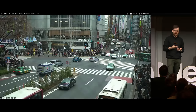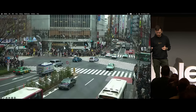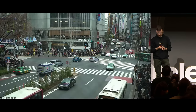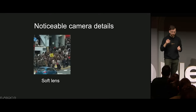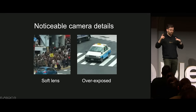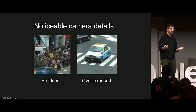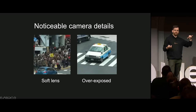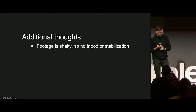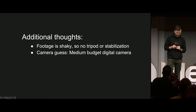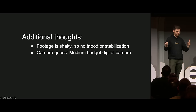I'm thinking this is a clip where someone is just trying to film what's happened - it's a tourist that got excited about an unusual situation. Some noticeable camera details: we got a soft lens and some overexposed areas. The dynamic range of the camera isn't high enough to see the details in the car paint, for example. And we also got some shaky footage, no tripod or stabilization, and I'm guessing it's a medium budget digital camera.